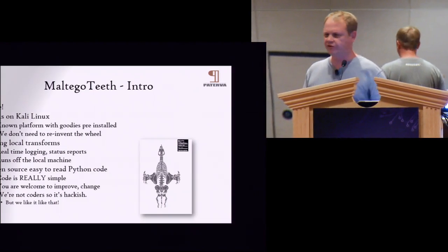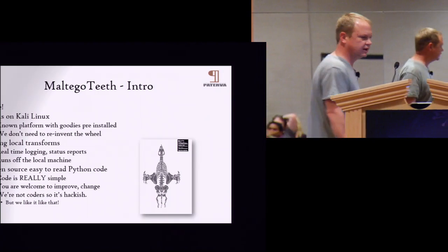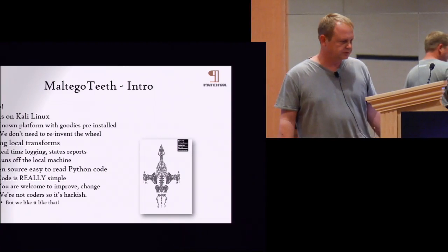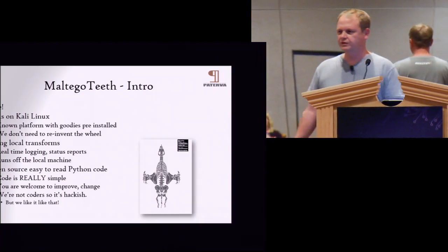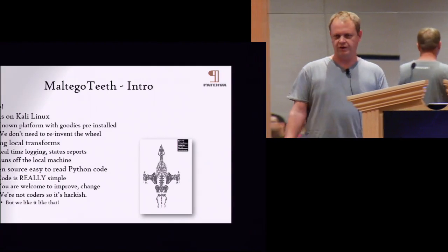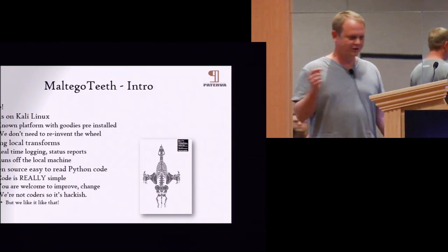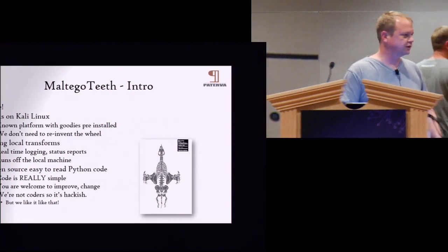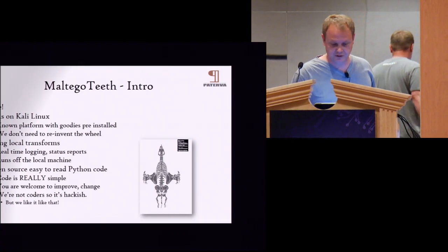We want to build it all with local transforms so we can get real-time logging, status reports, and interaction with the user. I really wanted to make it easy to read — the source is open and it's very easy to read code. It's also probably bad code because I wrote it. It's all in Python. You're welcome to change it, add to it, and do whatever you want with it — it's free. Dougie asked me about the licensing and I was like, 'That sounds like paperwork.'